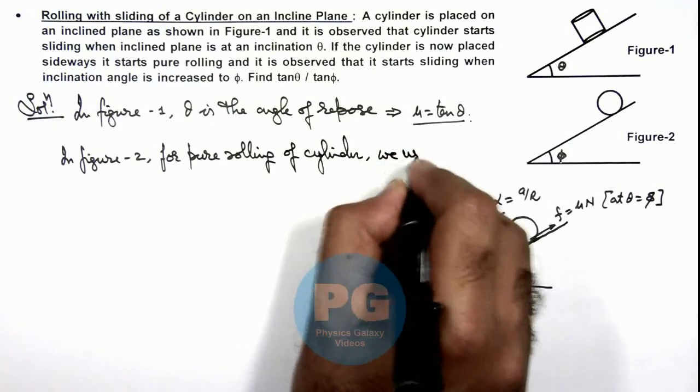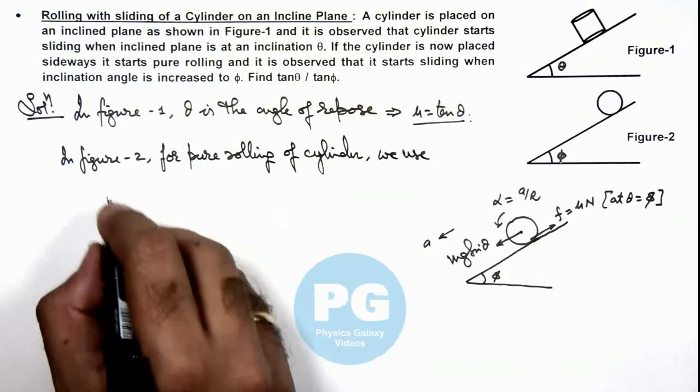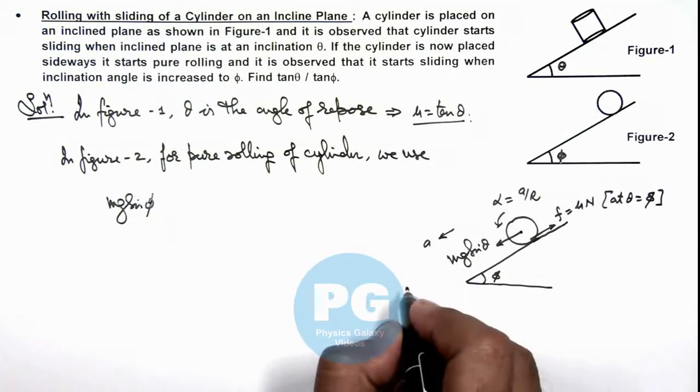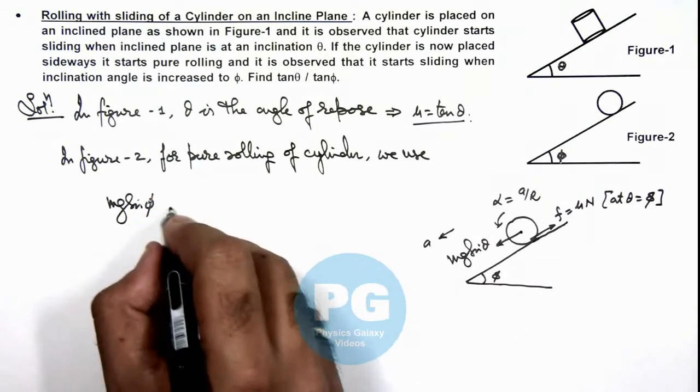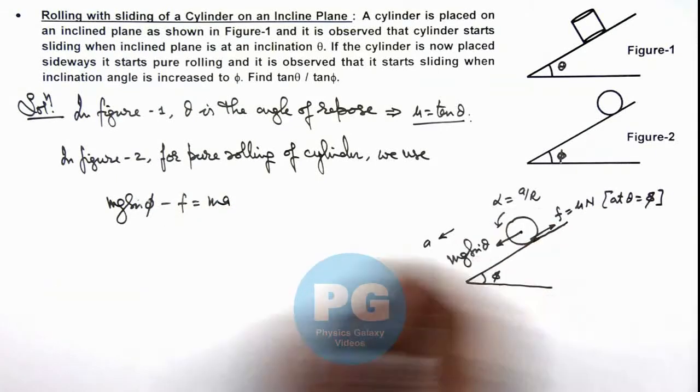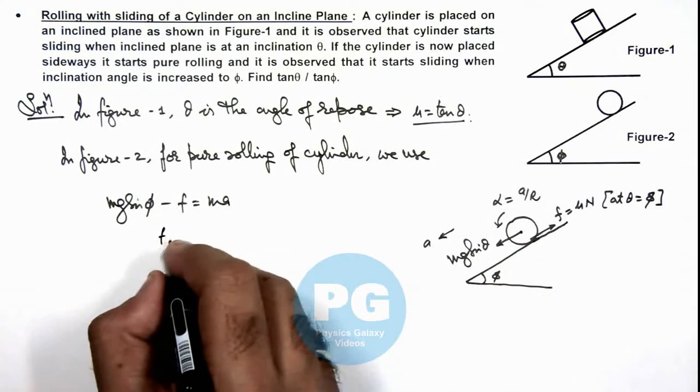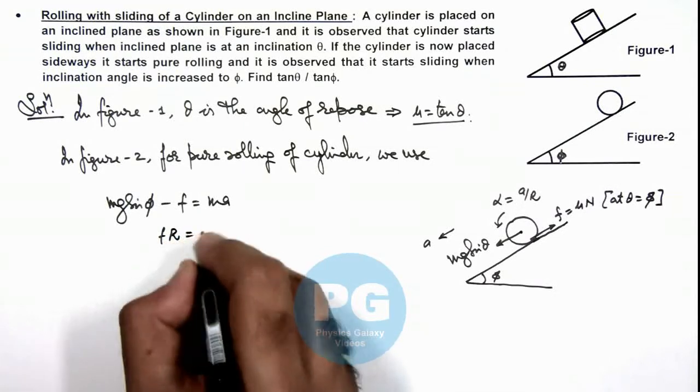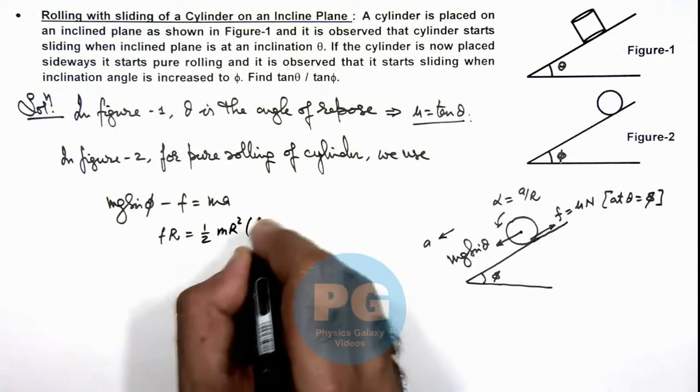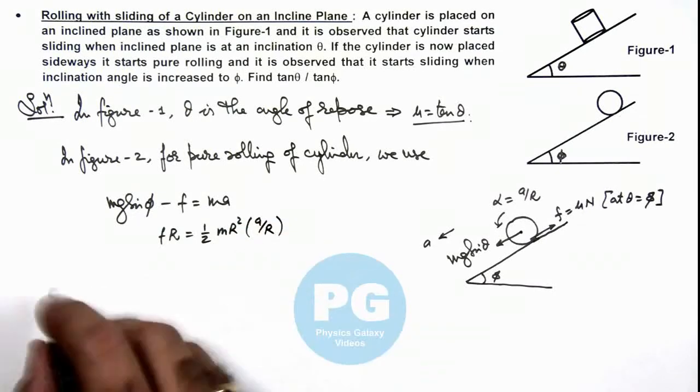In this situation we can write mg sine phi, here I am taking theta is equal to phi, minus friction is equal to m ay. And rotational motion is due to friction, so it is fr is equal to half m r square multiplied by ay by r.